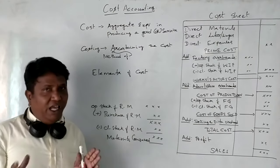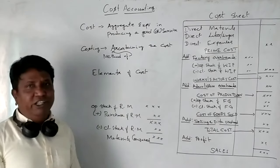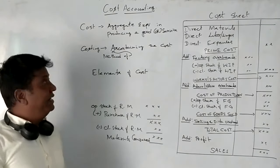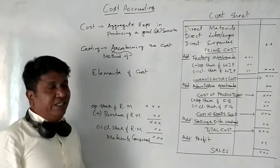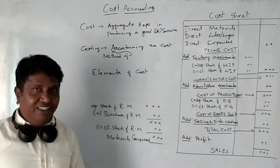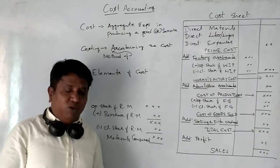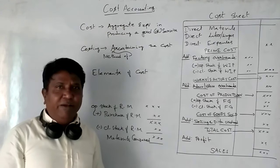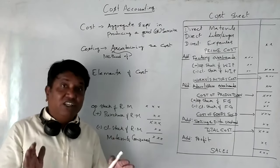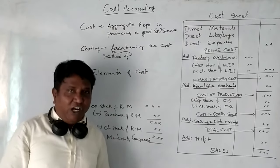In Cost Accounting, first, what is cost? Cost is an aggregate expenditure incurred in producing a product, a good, or a service.